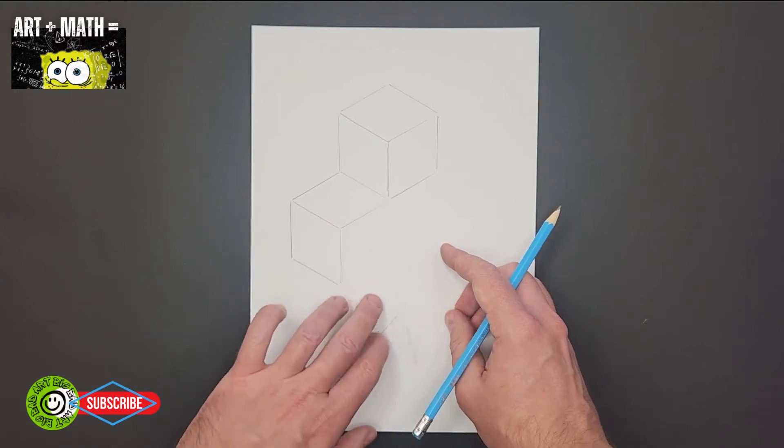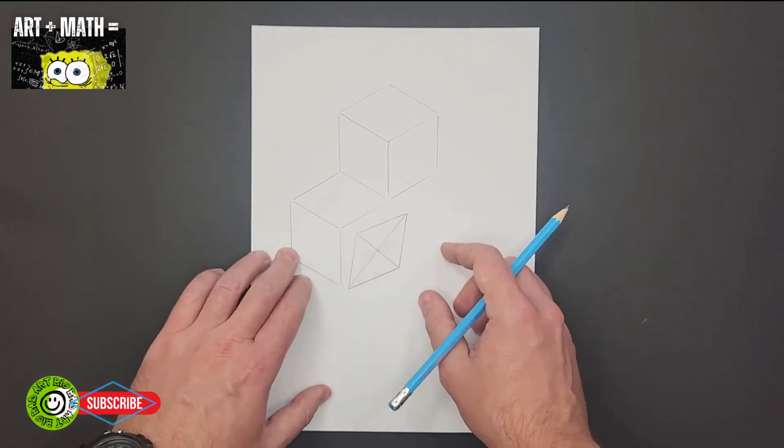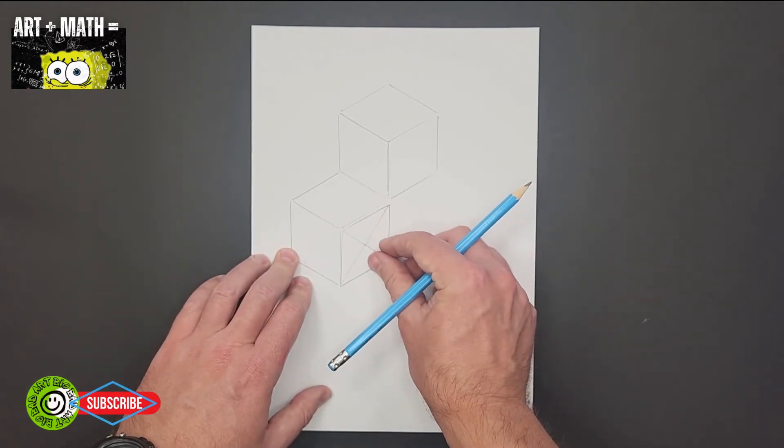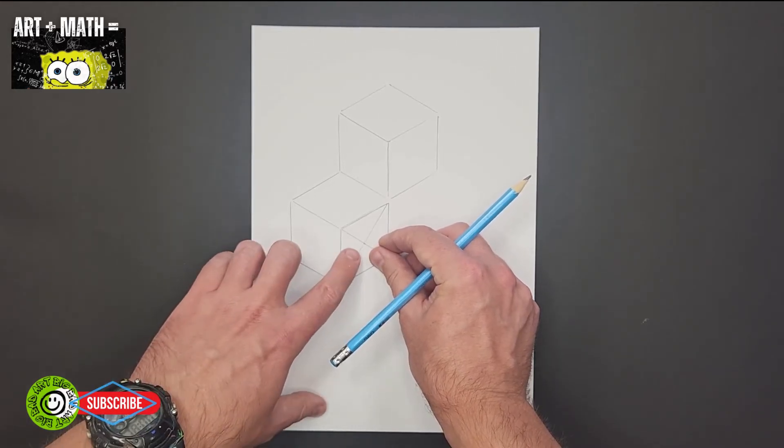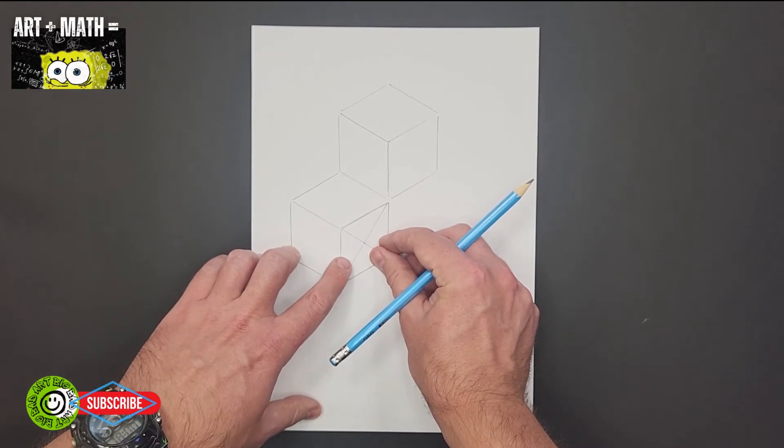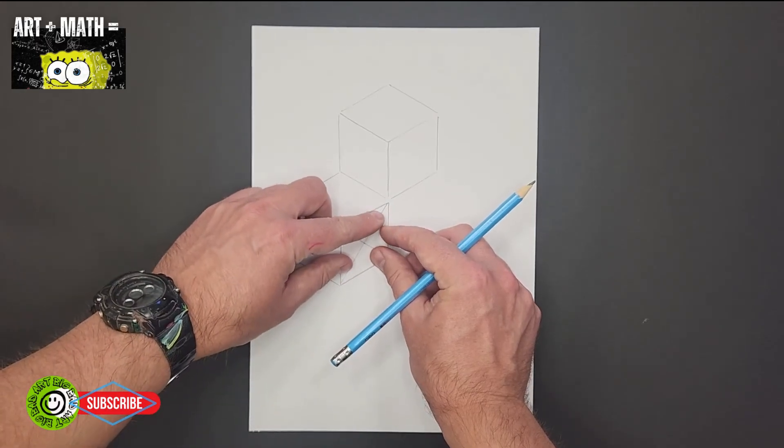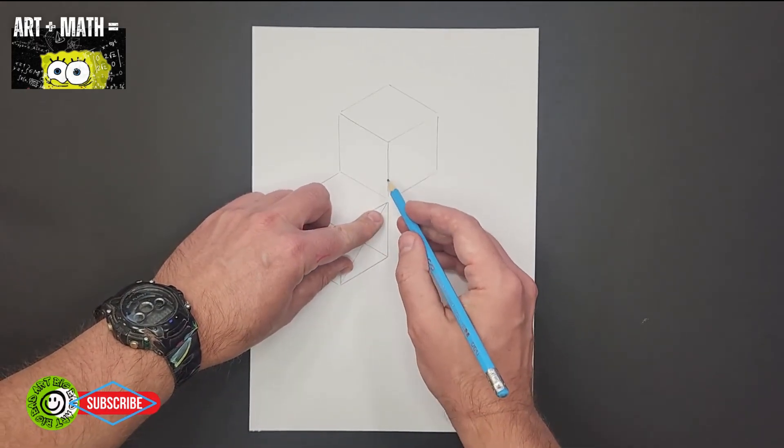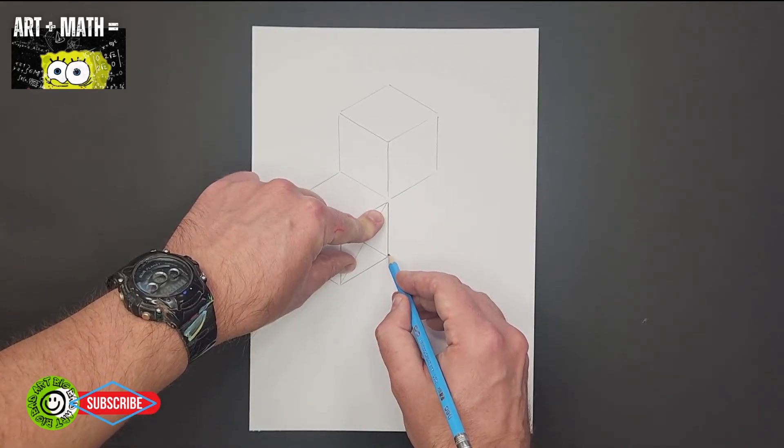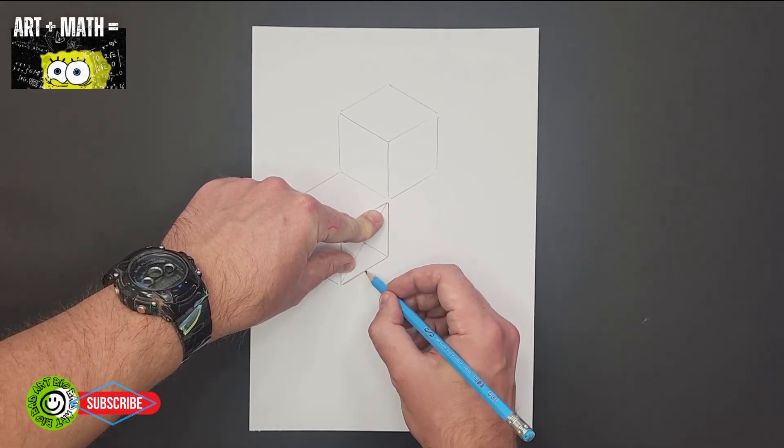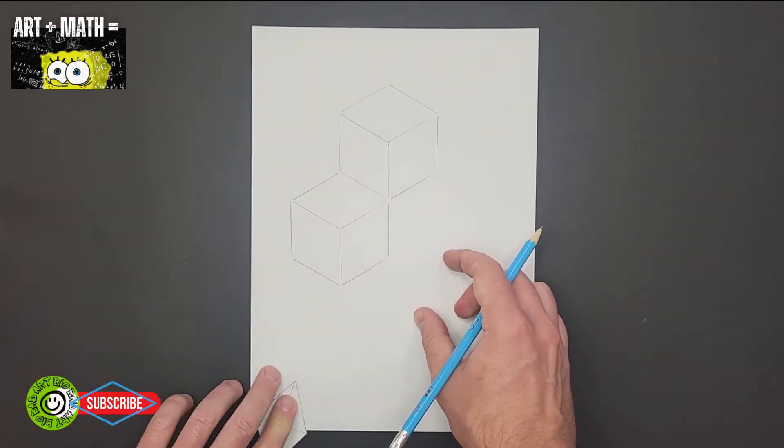Okay, and as you can probably guess, then we put the rhombus here. Okay, it should line up with the previous cube. Okay, there you go, cube number two.